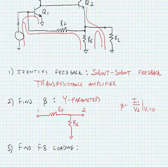In other words, this is the current that comes out of port 1 due to a voltage at port 2 when port 1 is short-circuited. So to find beta, we'd short-circuit port 1 and put a test voltage at port 2. If we solve this, we find that beta is equal to 1 divided by RF.